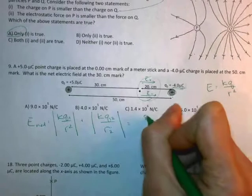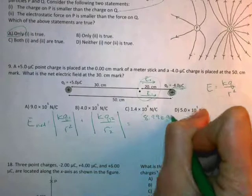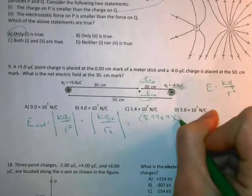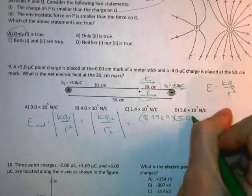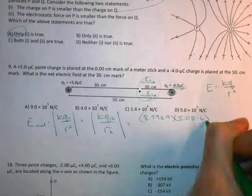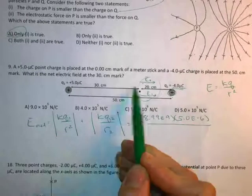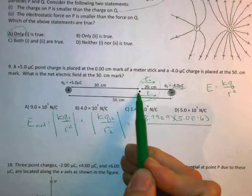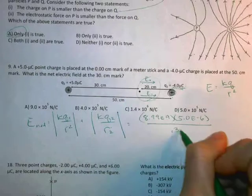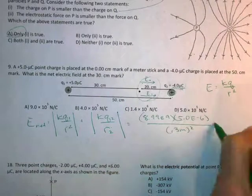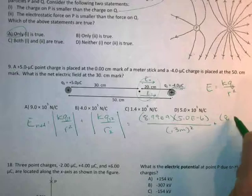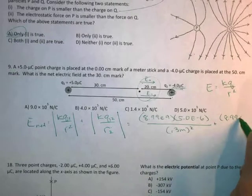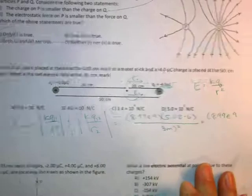Okay, so here's my K is 8.99 times 10 to the ninth. Q1 is 5 times 10 to the negative 6 Coulombs divided by R. That's the distance here. So that's going to be 30 centimeters, which is 0.3 meters squared plus K.